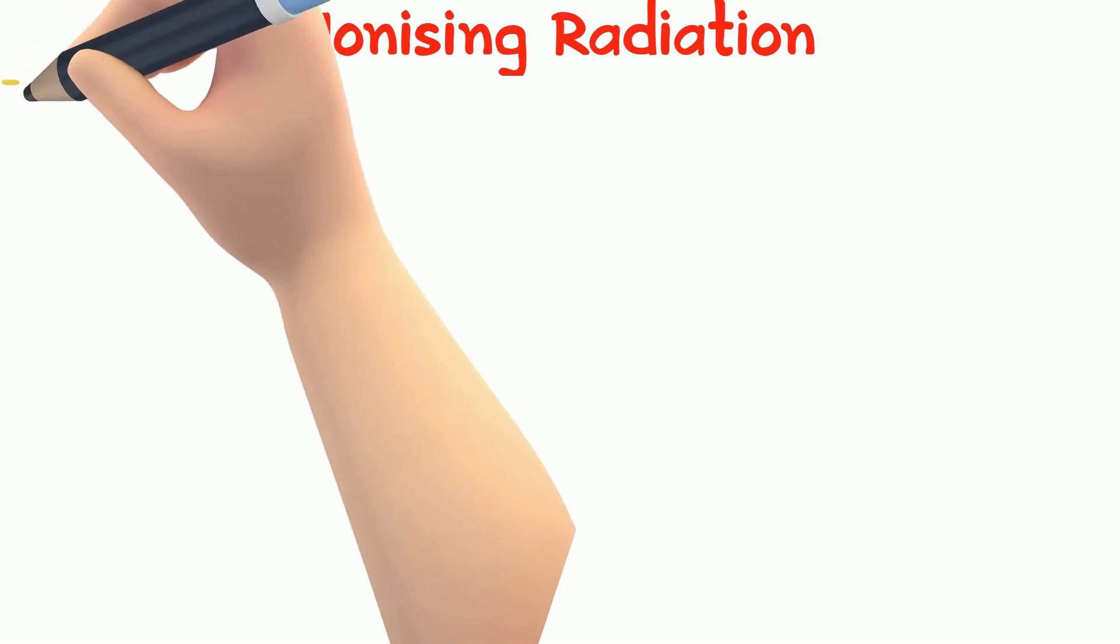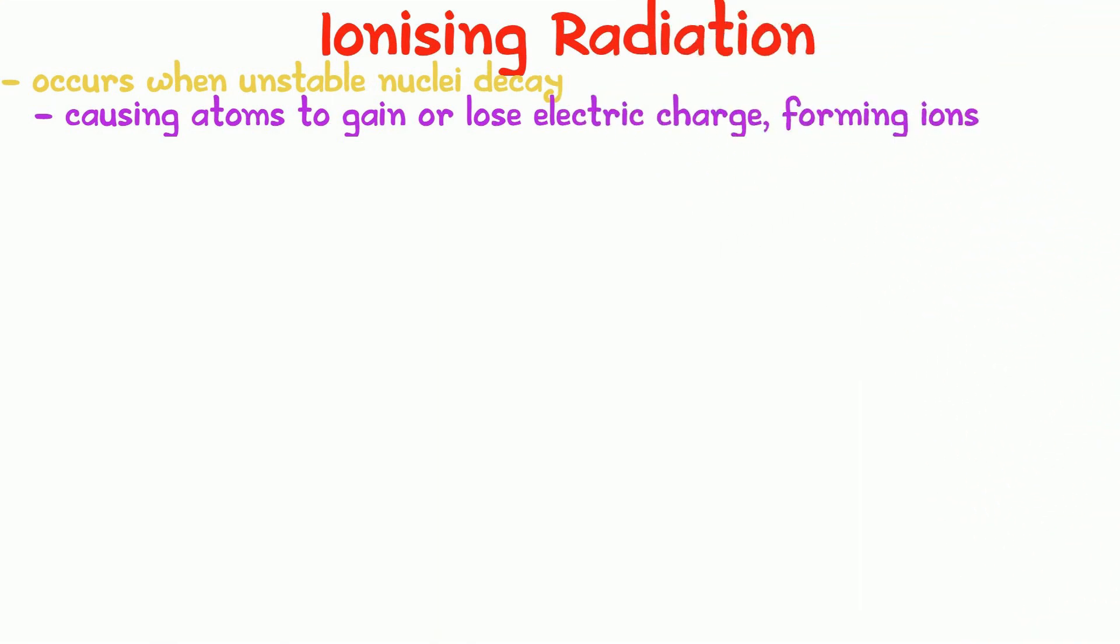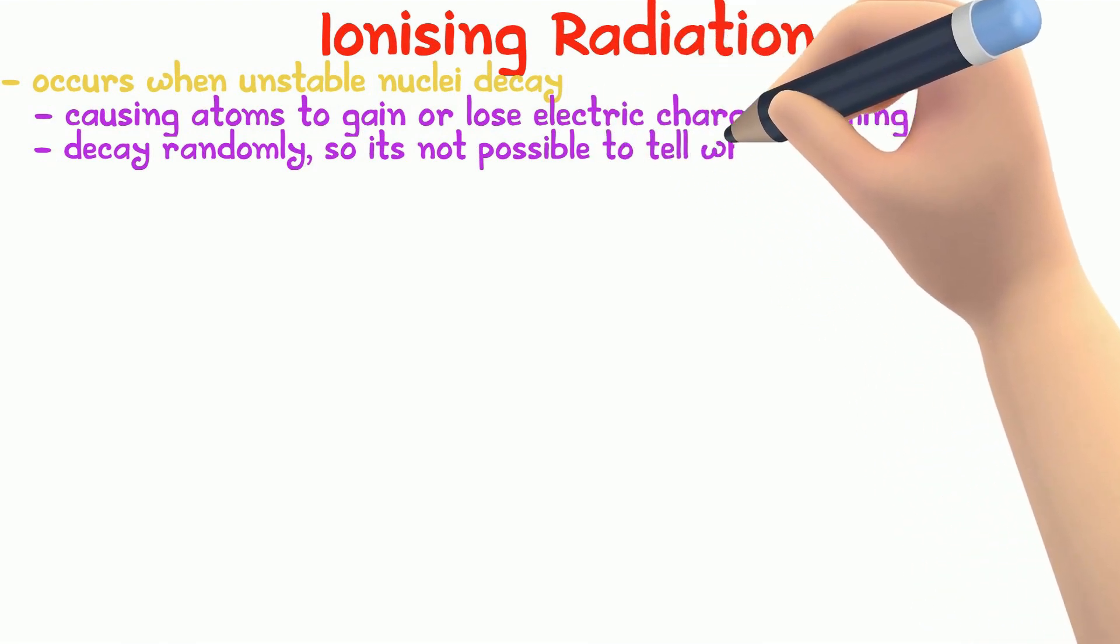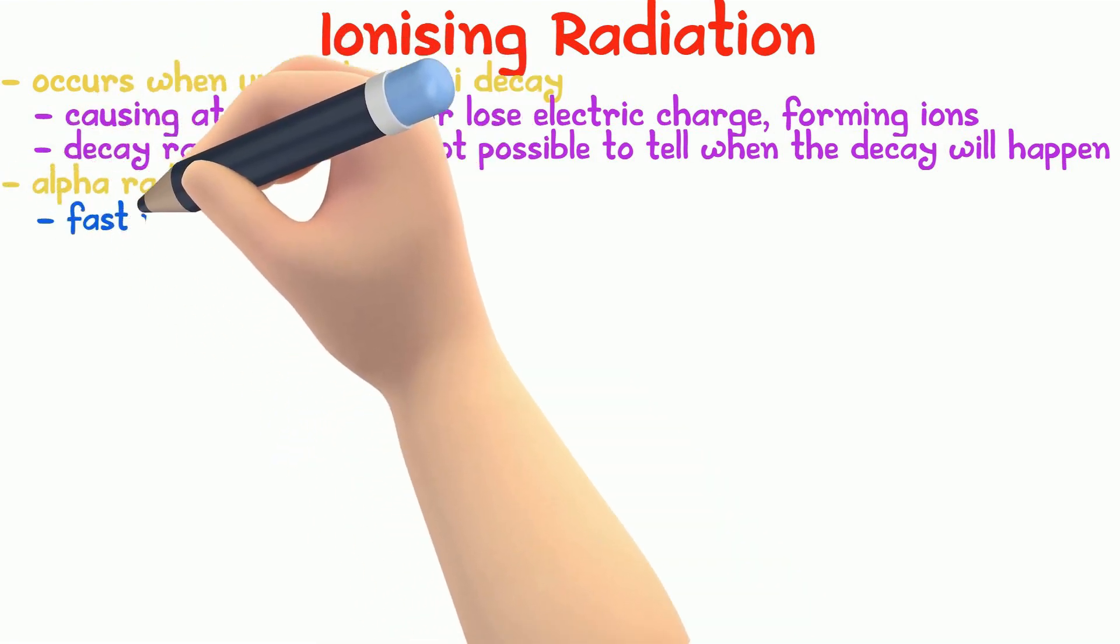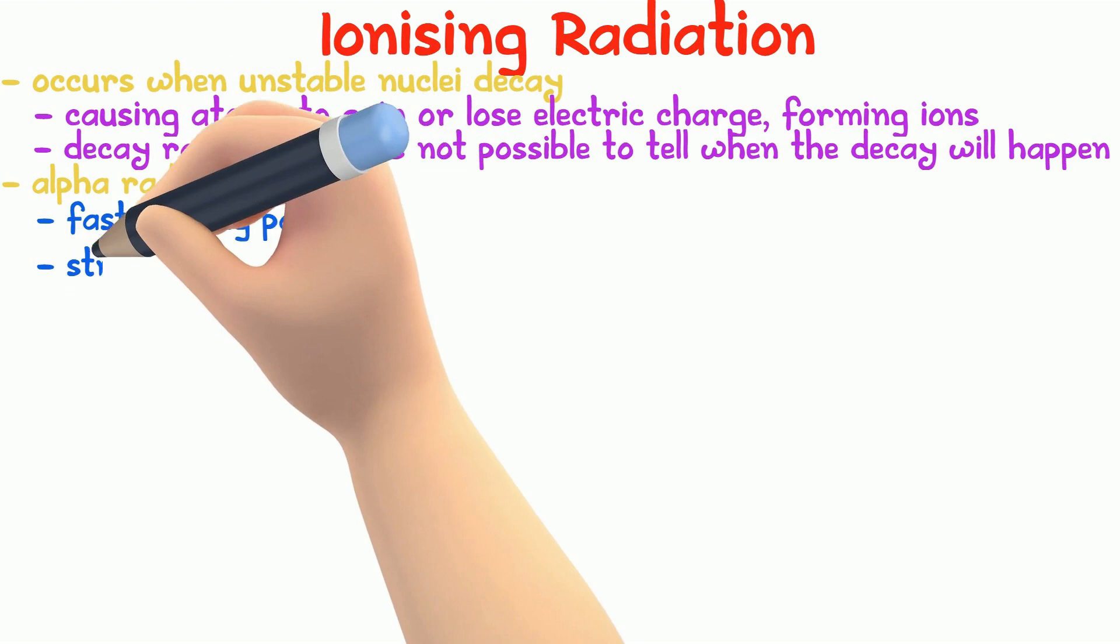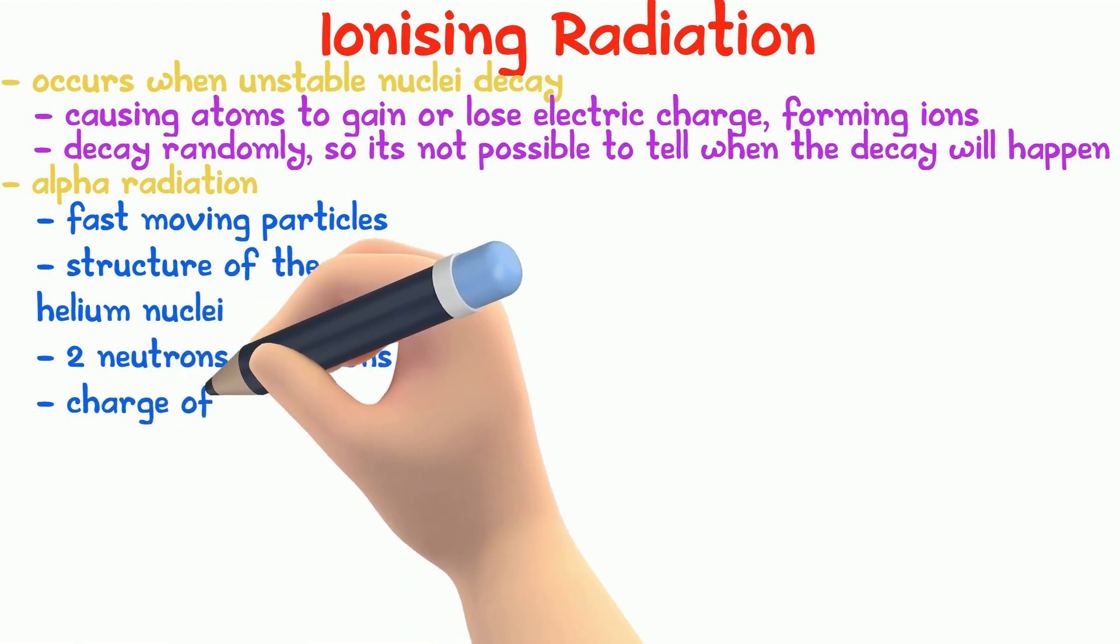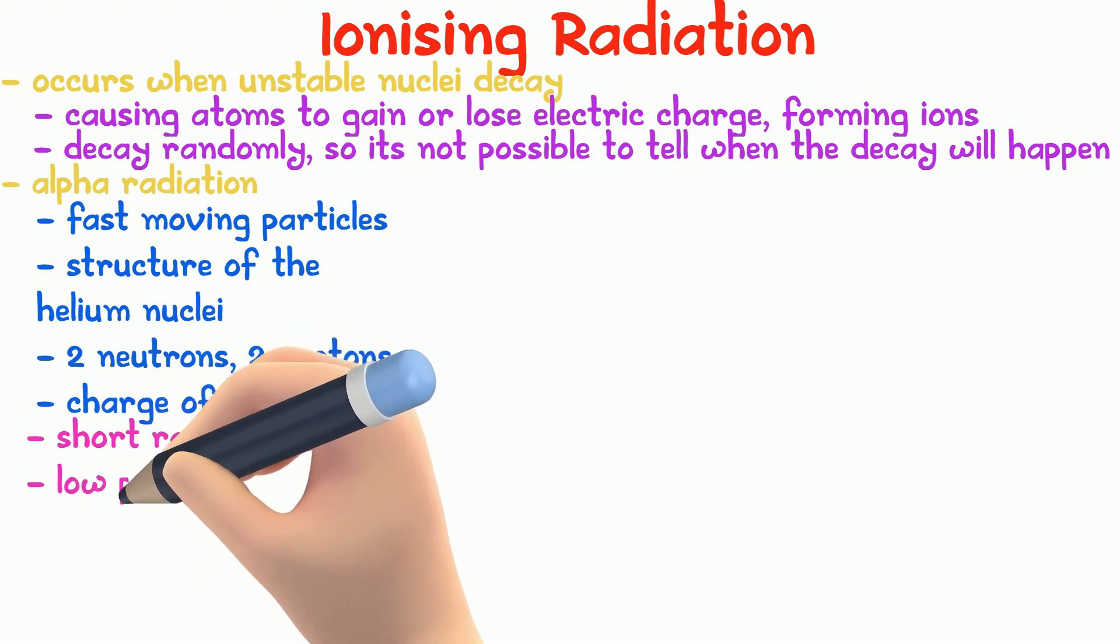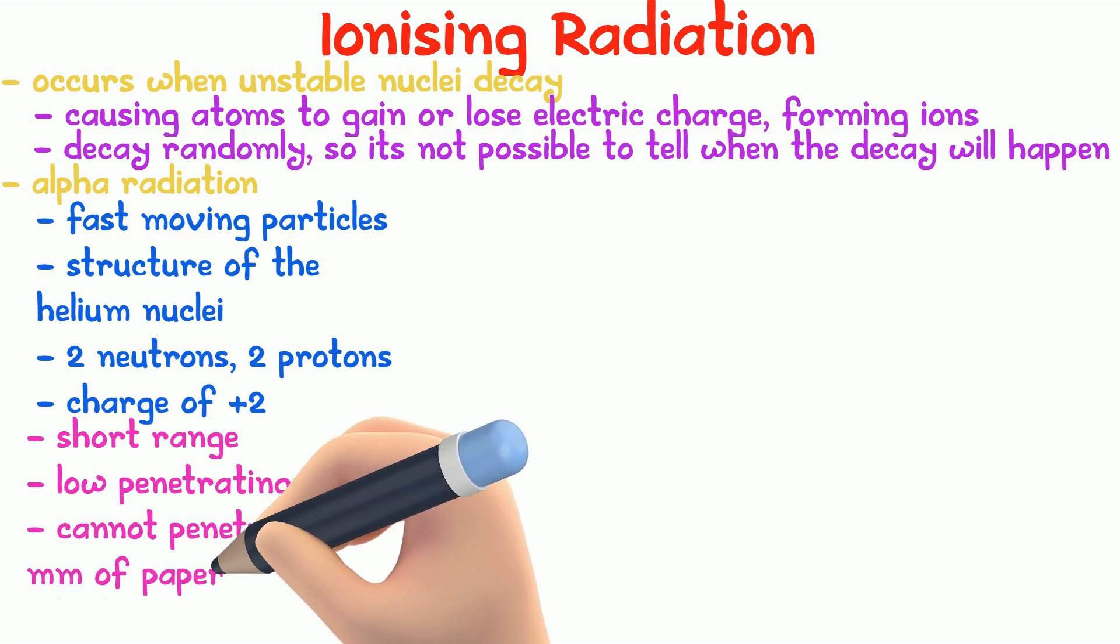Ionizing radiation occurs when unstable nuclei decay. It causes atoms to gain or lose electric charge, forming ions. Unstable atoms decay randomly, so it's not possible to tell when the decay would happen. There are four main types of ionizing radiation. Alpha radiation. Alpha are fast-moving particles. They are the same as the helium nuclei with a mass number of 4 and would have a charge of plus 2 because of the two protons. Some features of alpha radiation: they have a short range, commonly travel a few meters in air, cannot penetrate few millimeters of paper, and are highly ionizing.